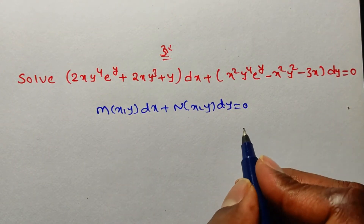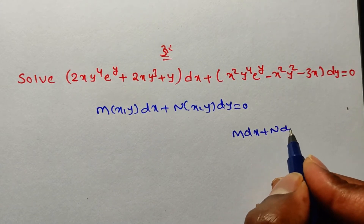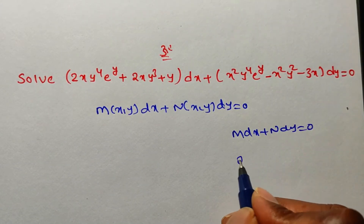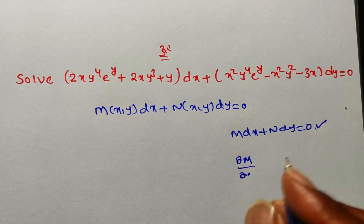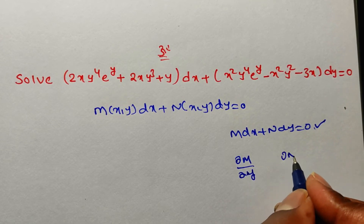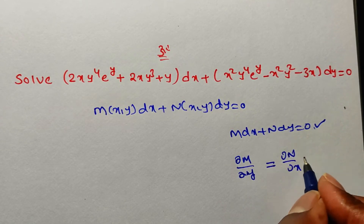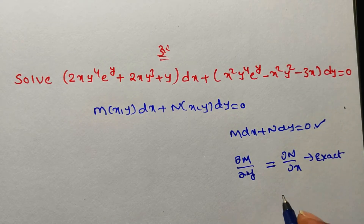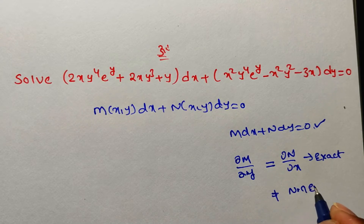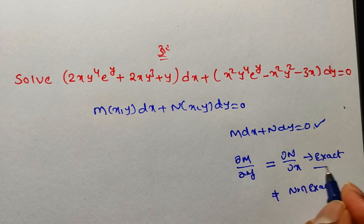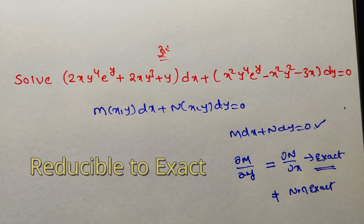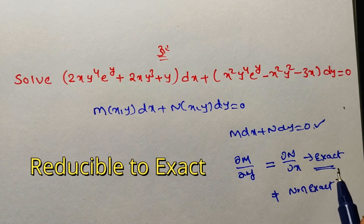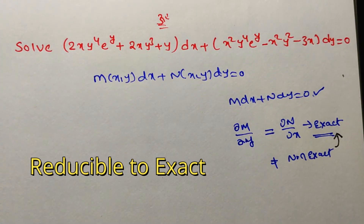If they are given in the form of M dx + N dy = 0, we have to verify whether the given differential equation is exact or not. We find ∂M/∂y and ∂N/∂x. If both are equal, it is exact. If not equal, it is non-exact. If exact, we get the general solution directly; if non-exact, we must find an integrating factor to make it exact.